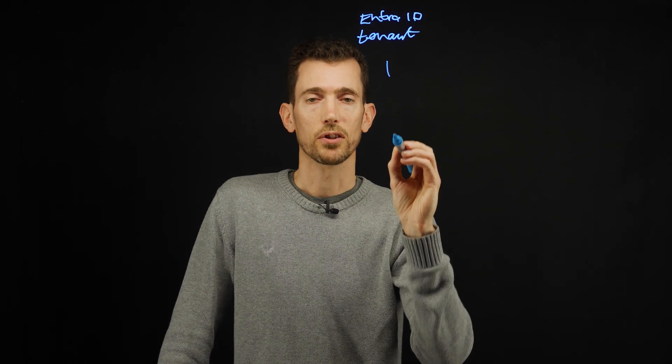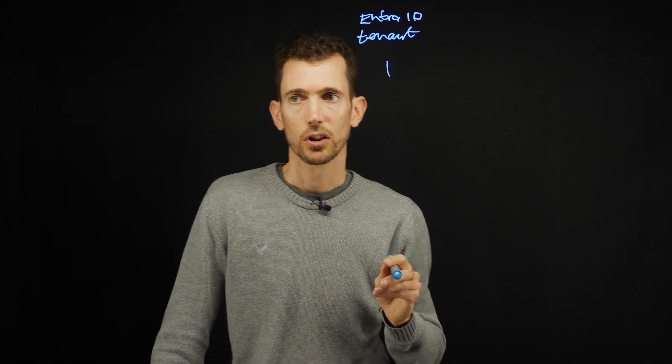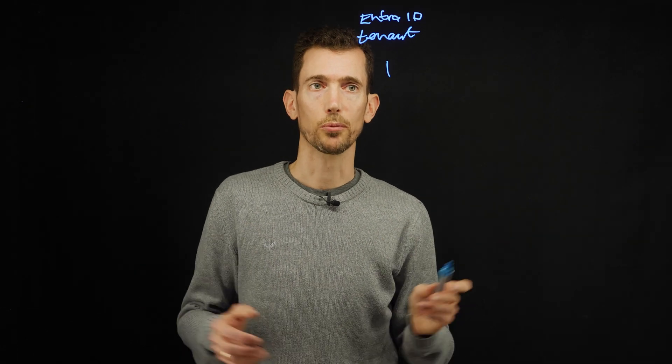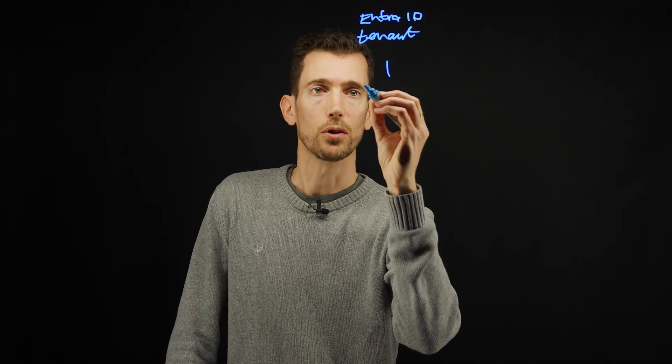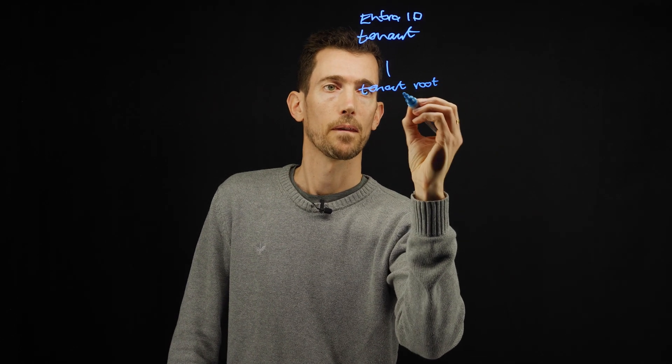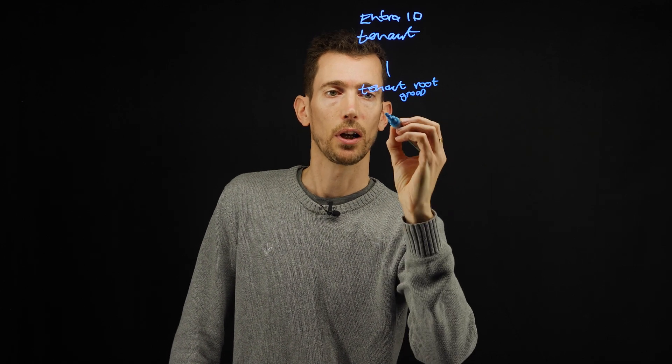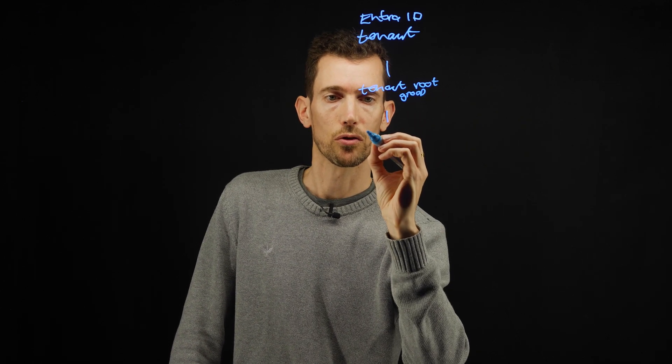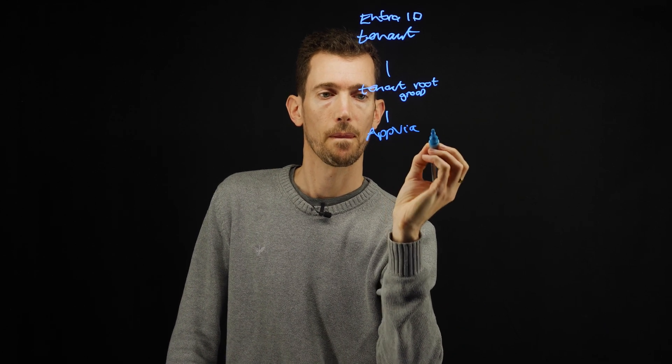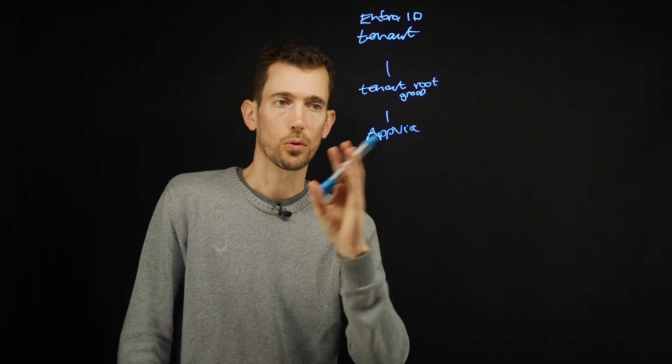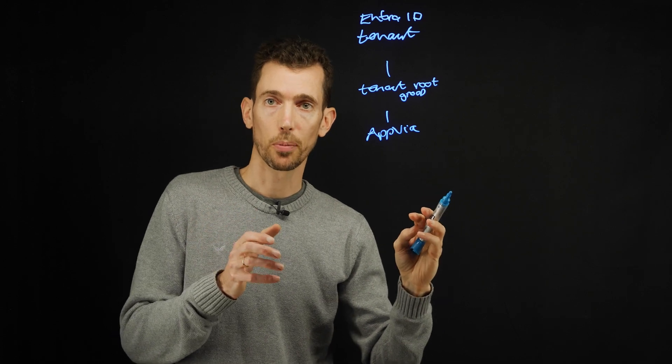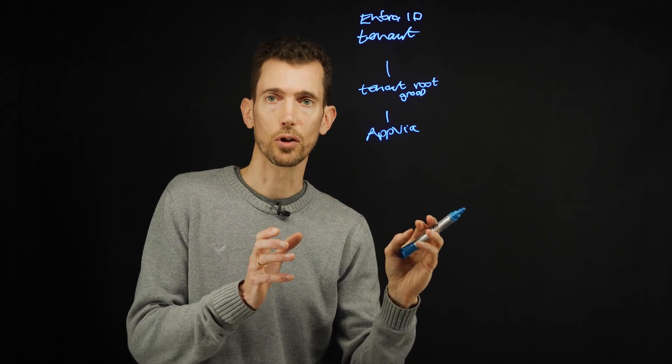Below that you have something called management groups. As the name suggests, these are groups that allow you to manage resources more effectively. By default you'll always get a tenant root group. And then below that you'd create one for your corporation. The whole point of management groups is to organize your resources so that you can then apply things like Azure Policy onto those different groups.